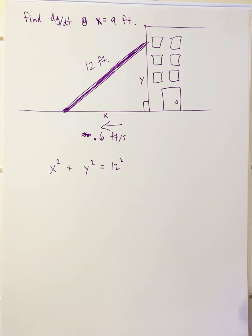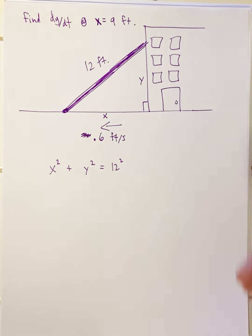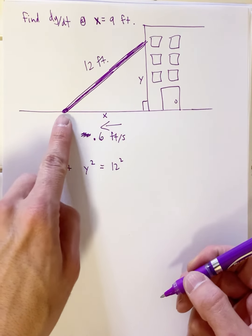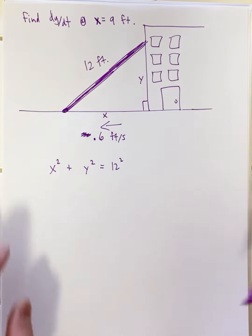This is one of those related rate type problems where there's a ladder leaning against the wall. We have a 12-foot ladder and what's going to happen is we're going to grab the ladder from the point here on the ground and drag it away.